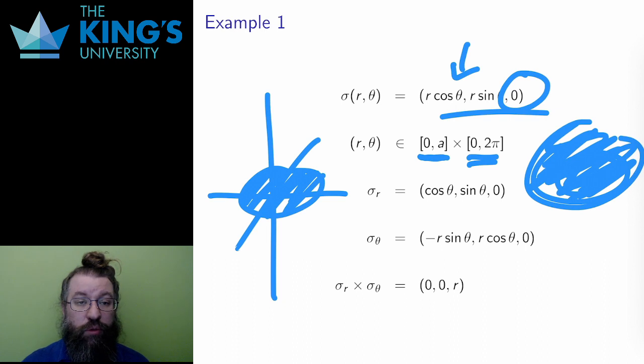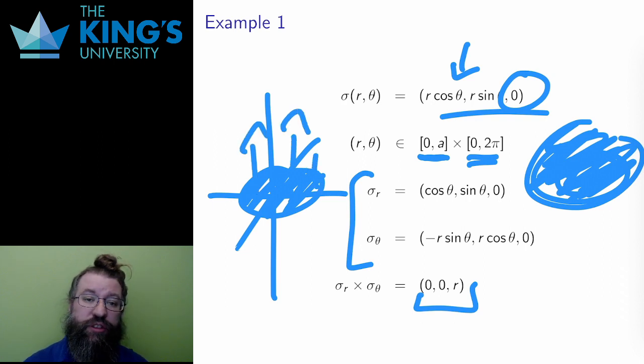Well, I also need to calculate the normal. So here are the two partial derivatives. And the cross product here is (0,0,r) after simplifying sin squared plus cos squared to 1. This is a vertical vector, and that makes sense. The surface is a horizontal surface, so its normal, perpendicular to that, should be vertical.